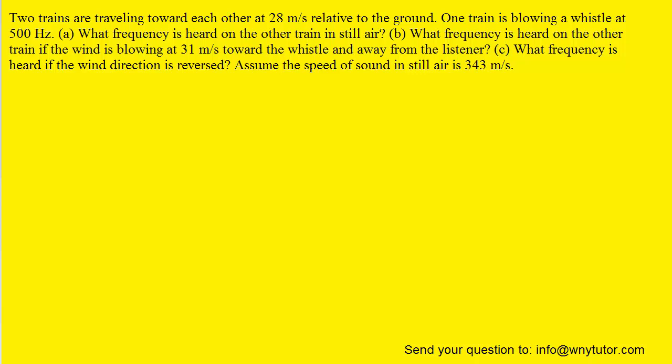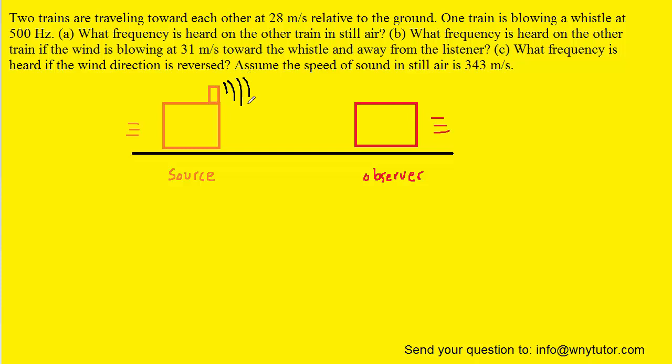What we'll do first in order to solve the question is draw a picture of these two trains as they approach each other. Here we have a train that we've labeled the source, and we're going to assume that train is the one producing a whistle or a sound. The other train we've labeled the observer and have colored in red.